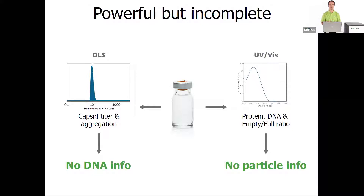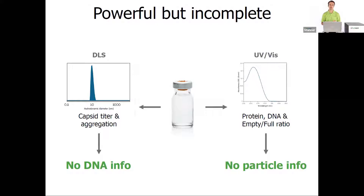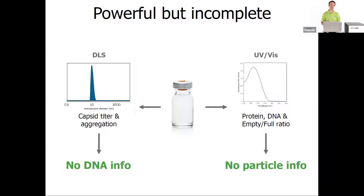Let's take a look at two technologies: DLS and UV-Vis. Each is very powerful for understanding your AAV sample, but each is incomplete when standing on its own. With DLS, we get a picture of the size and size distribution of your capsid, and we can use that to understand capsid titer as well. But DLS doesn't give you any insight into DNA or nucleic acids in your sample. For UV-Vis, you can look at amounts of protein and DNA, and even get the empty-full ratio — but you have no understanding of whether you're looking at particles or just free protein. Each technique is powerful, but they don't give you the whole picture.